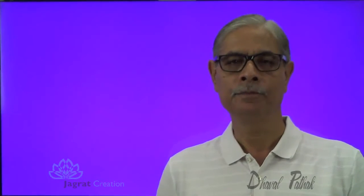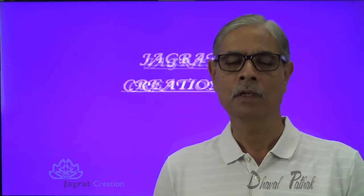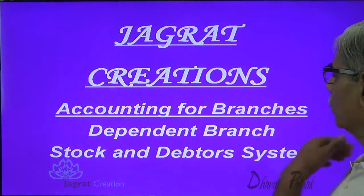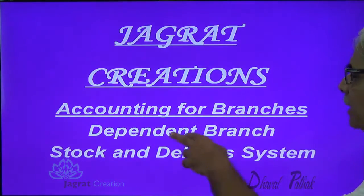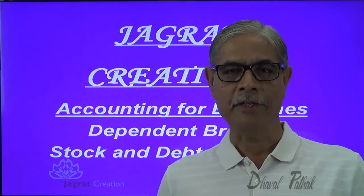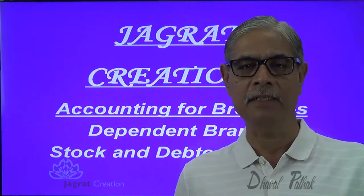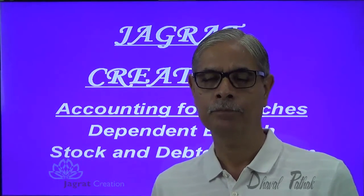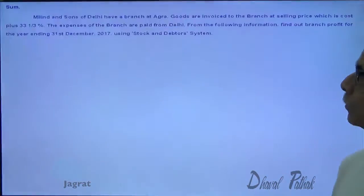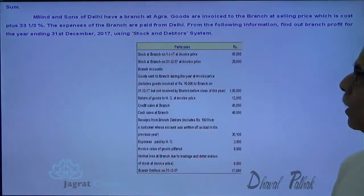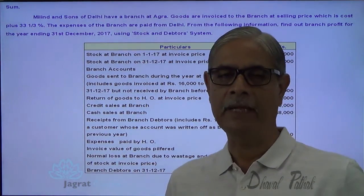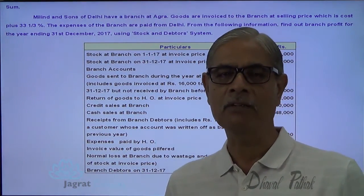This video is created by Jagrad Creation. It is on accounting for branches — dependent branch stock and debtors system. I wish to explain one sum on stock and debtors system. Observe the sum on the screen. This is the sum which I wish to explain and solve here before you.